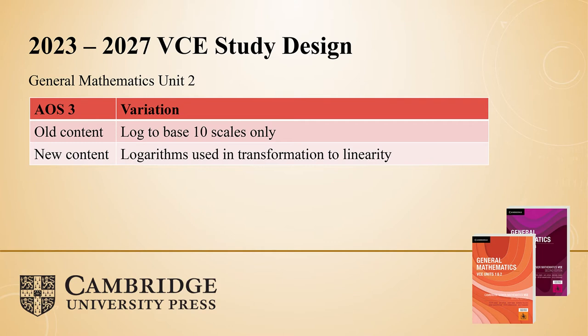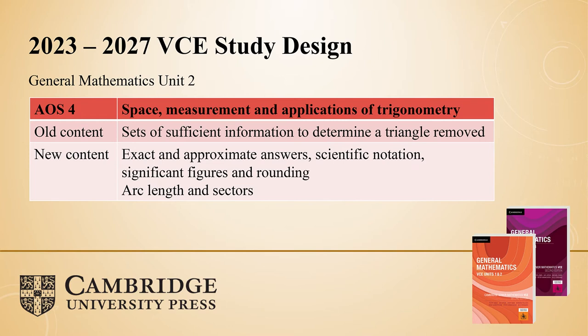A lot of variation draws upon everything you have been teaching in year 11 right now. Space and measurement is one of those topics that doesn't carry through to general 3-4, and is more there for students thinking about moving into foundation maths. Arc lengths and sectors from the current 3-4 course have been translated into the new 1-2 course for next year, and the idea of significant figures and rounding is good for students to get exposure to.